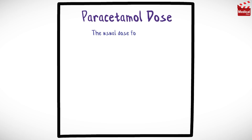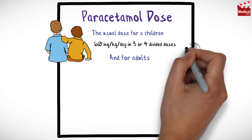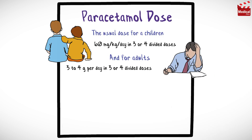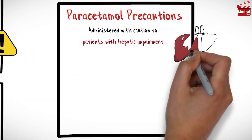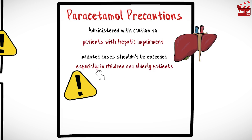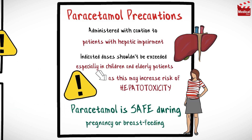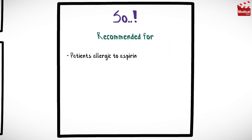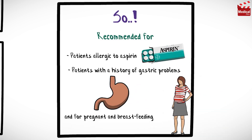The usual dose of paracetamol for children is 60 mg per kg per day in 3 or 4 divided doses. For adults, the usual dose is 3 to 4 g per day in 3 or 4 divided doses. Paracetamol should be administered with caution to patients with hepatic impairment. Indicated doses should not be exceeded, especially in children and elderly patients, as this may increase the risk of hepatotoxicity. Paracetamol is safe during pregnancy and breastfeeding and is particularly recommended for patients allergic to aspirin, patients with a history of gastric problems, and for pregnant and breastfeeding women and children.